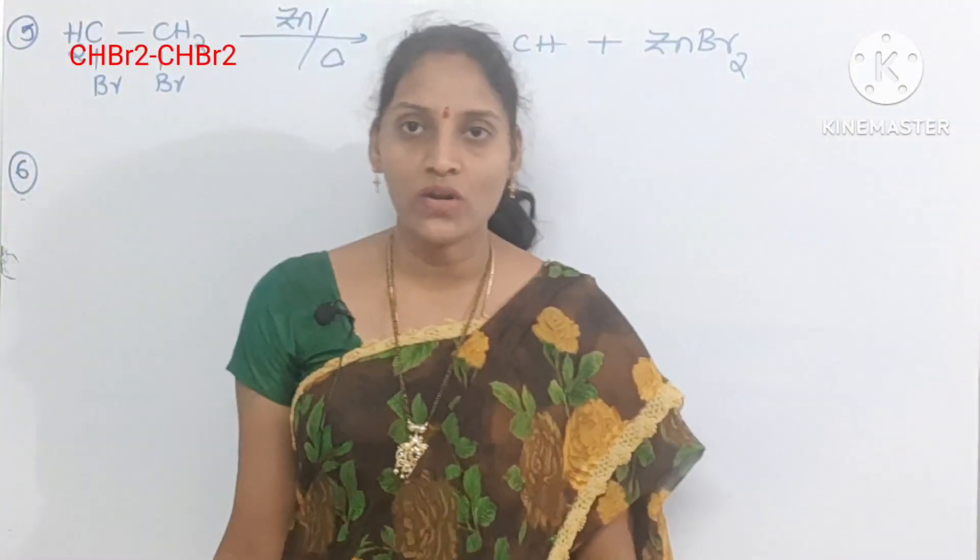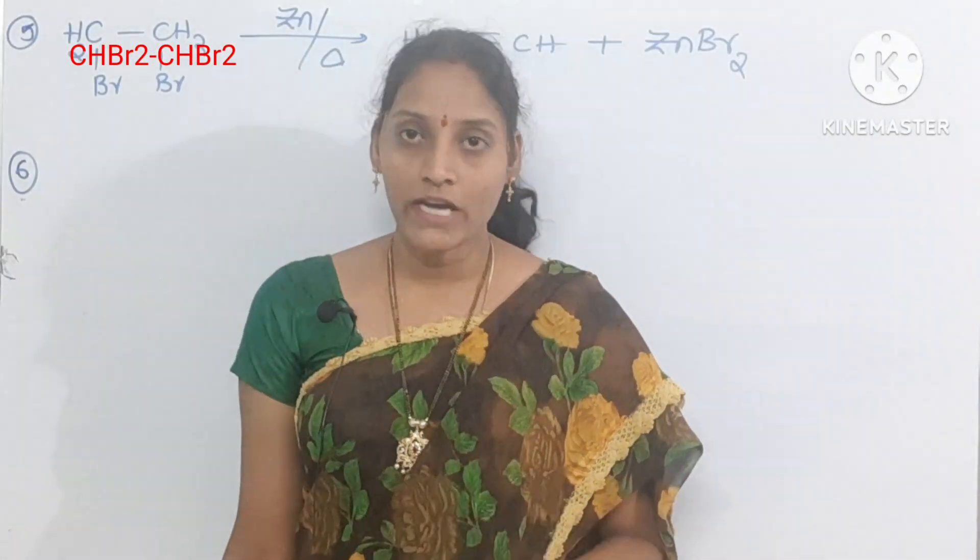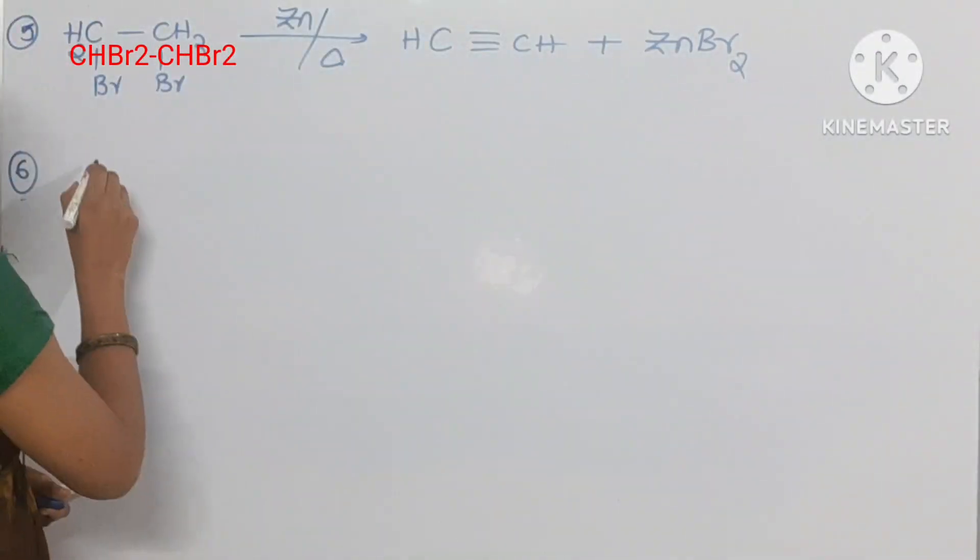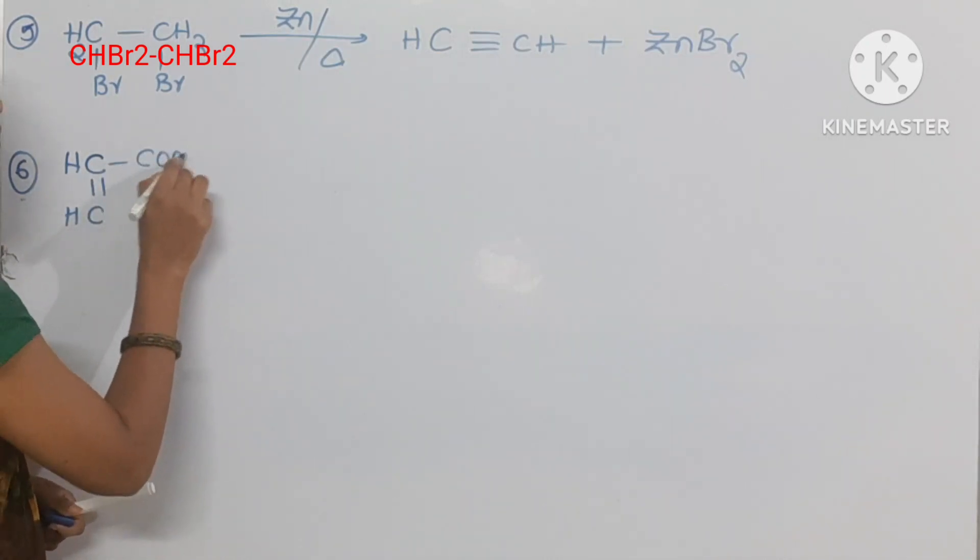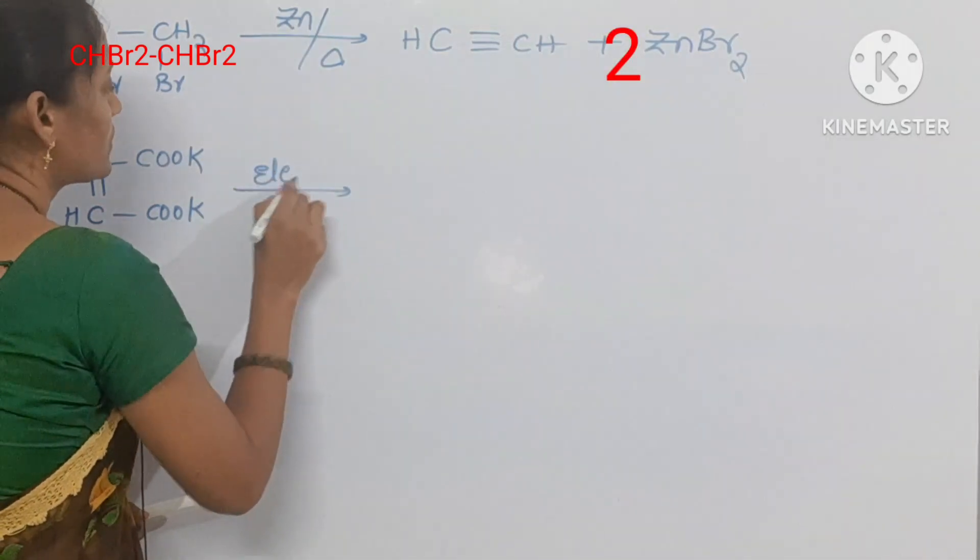Coalbine electrolysis method. Aqueous solution of potassium maleate or fumarate you should take. Electrolysis. This is potassium maleate CH-COOK and then this one also. So here this is involved in electrolysis procedure.